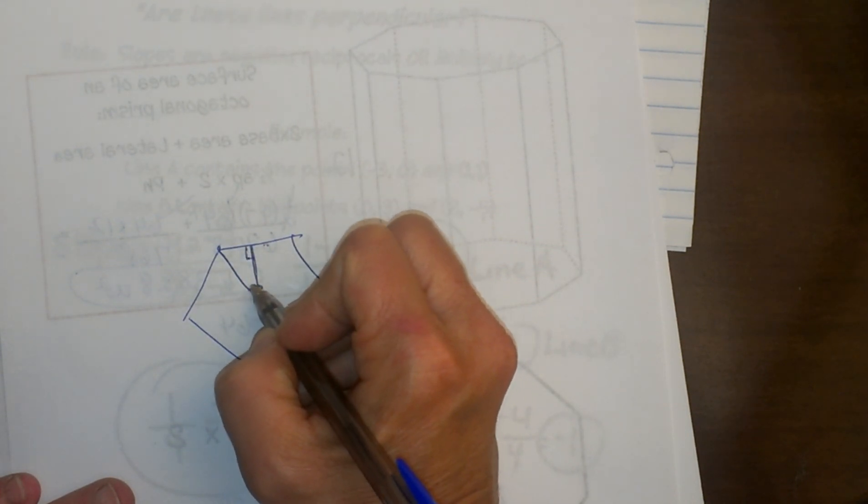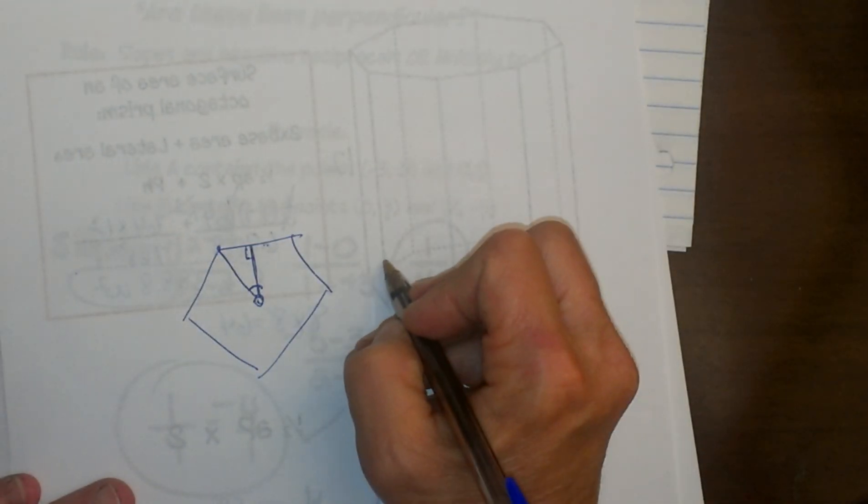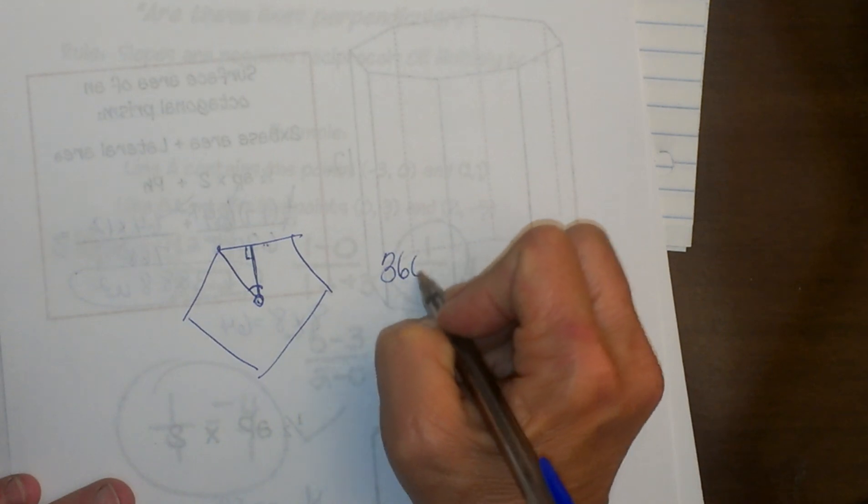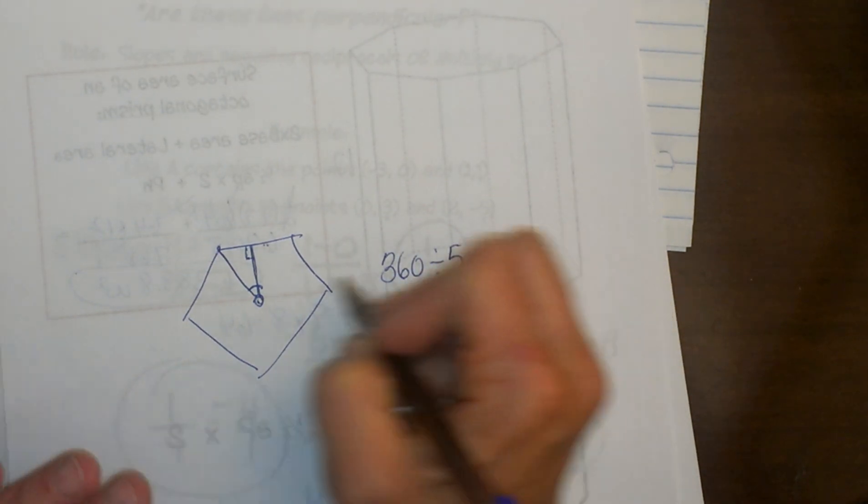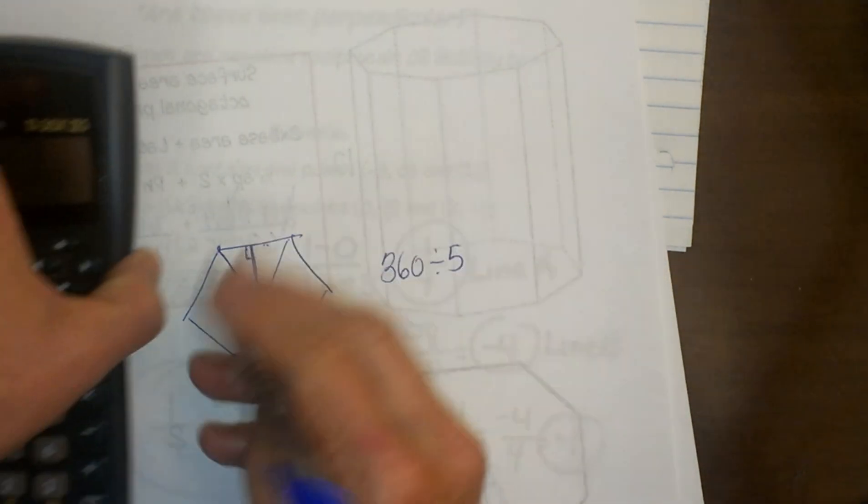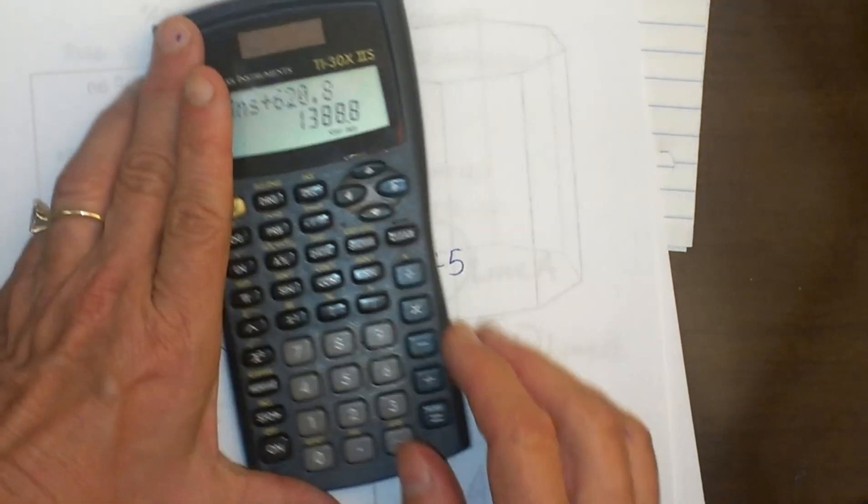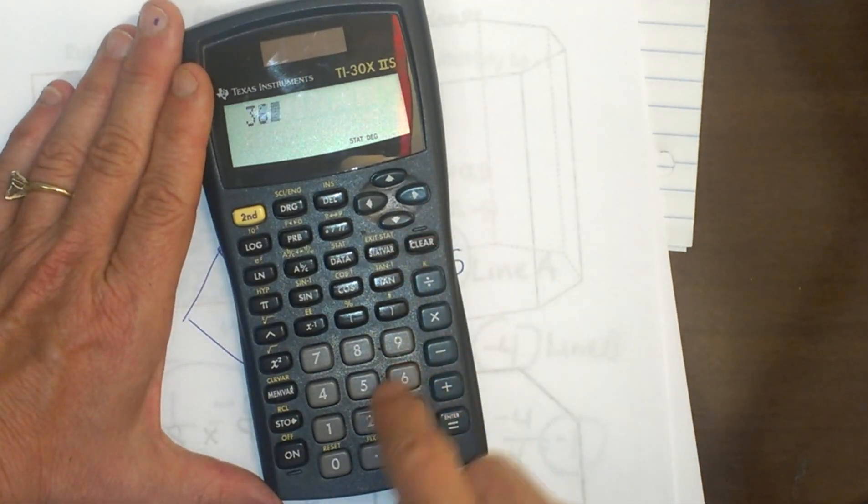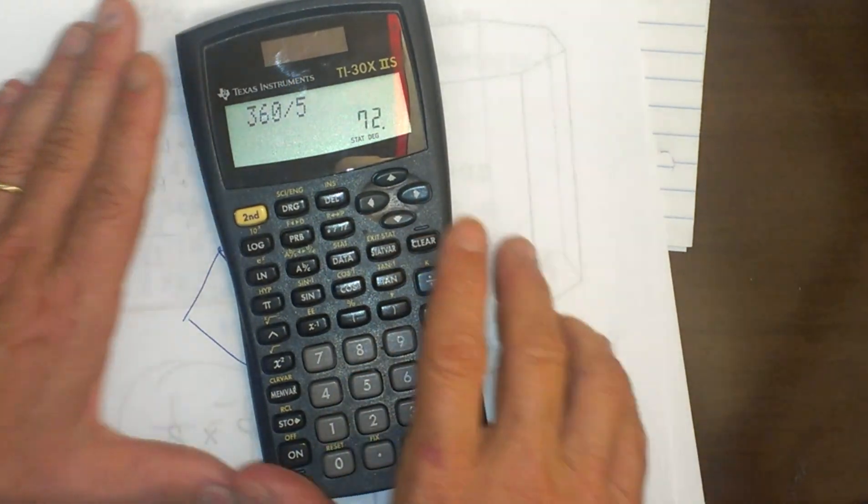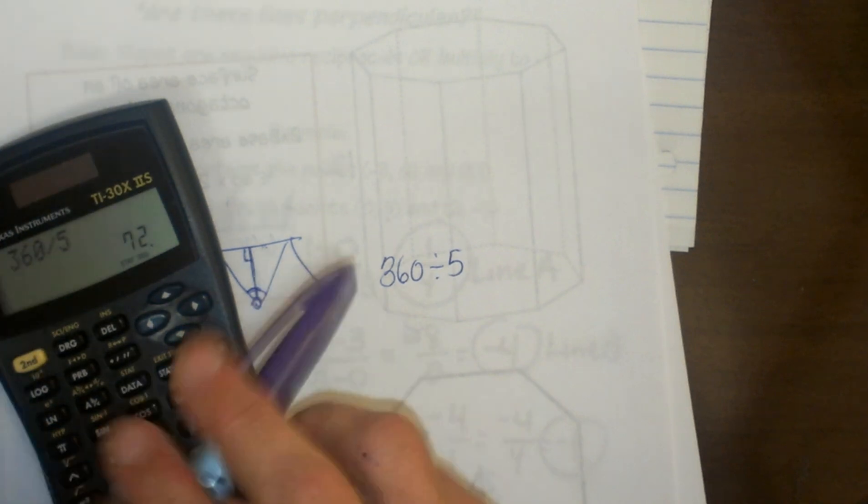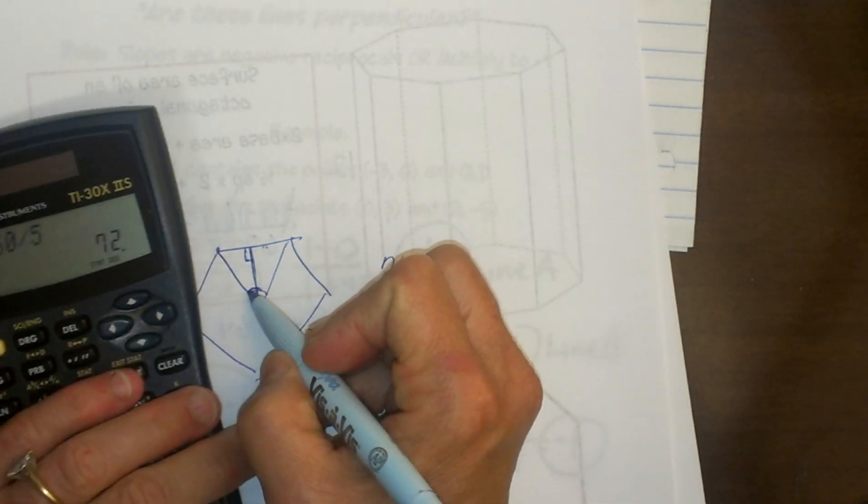You're going to take 360 divided by 5 to get the central angle. So let's see, you're going to take 360 divided by 5 and that gives you 72, and that is the whole central angle. Right? 72.